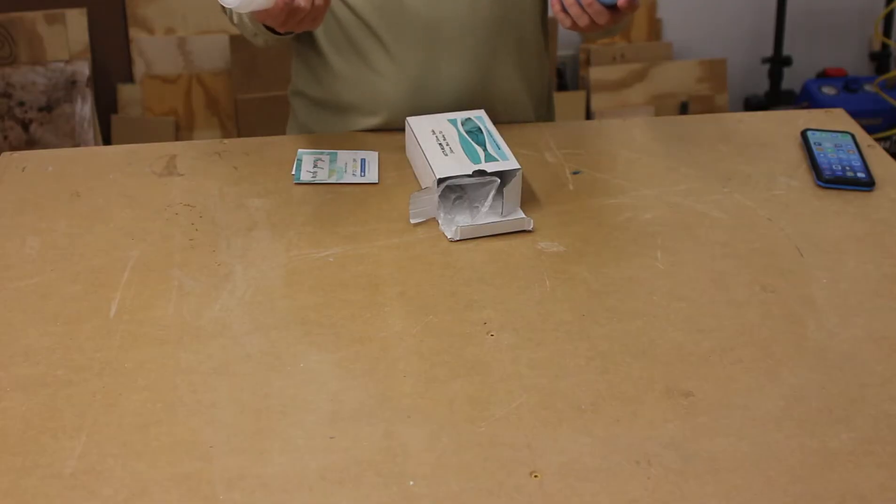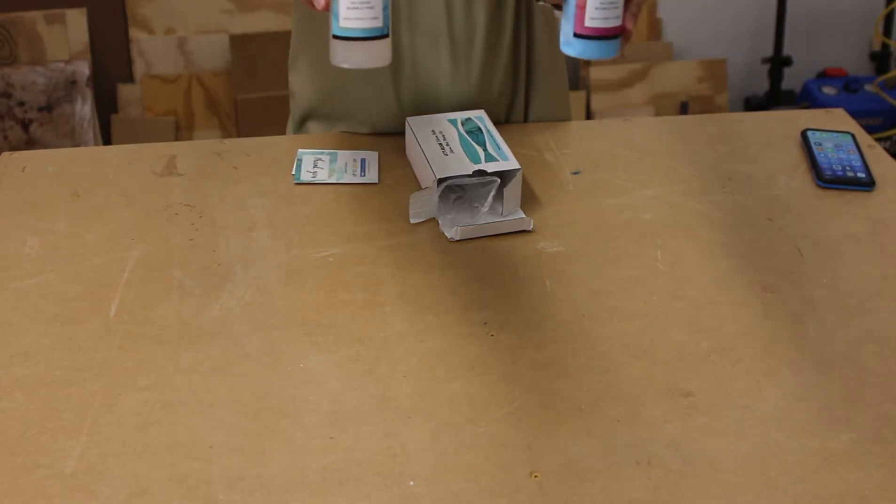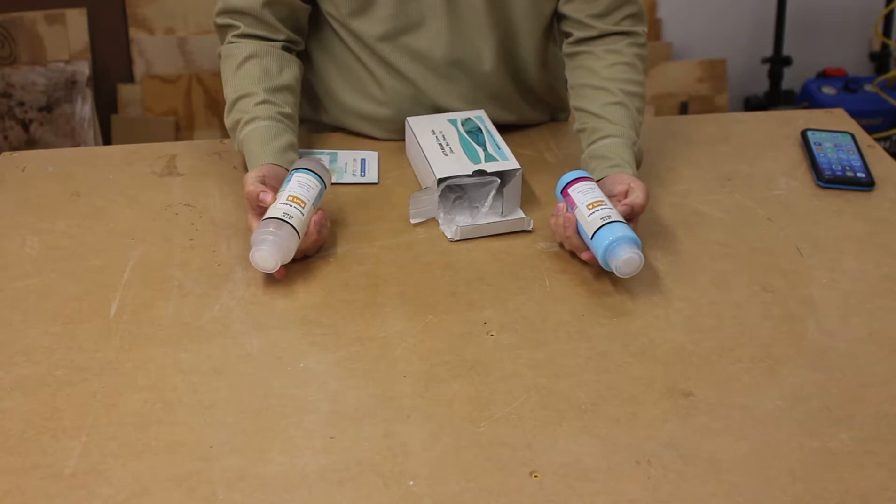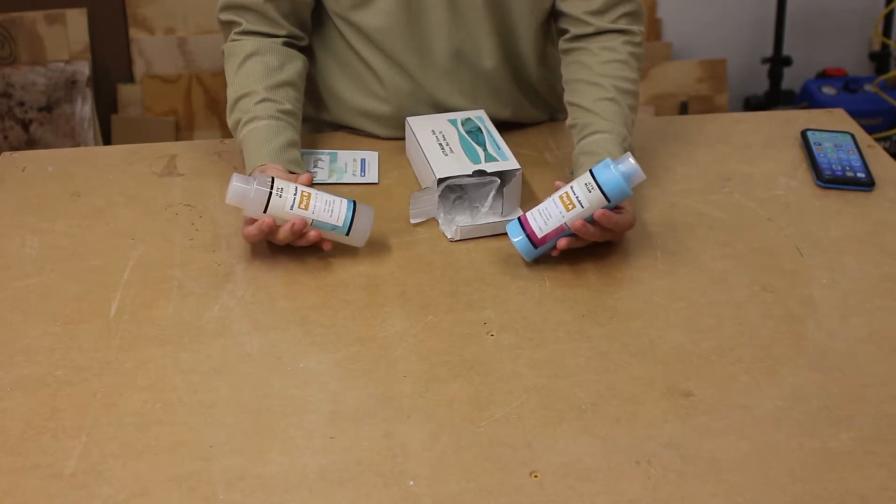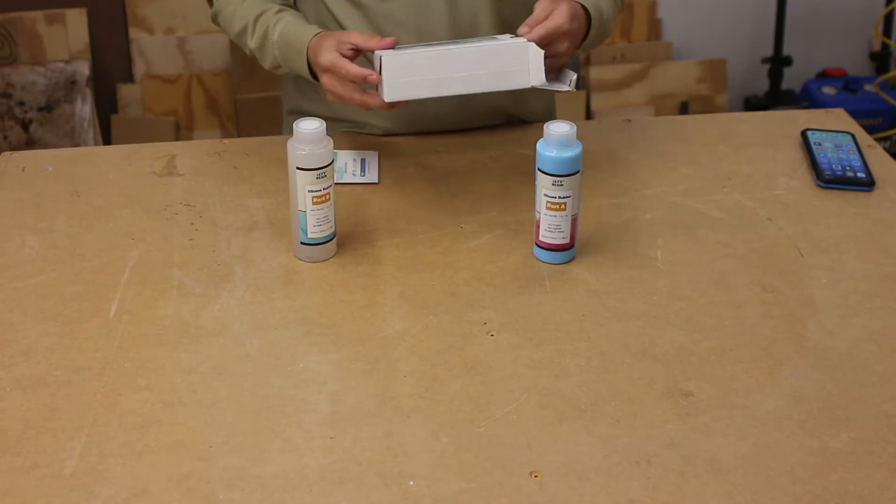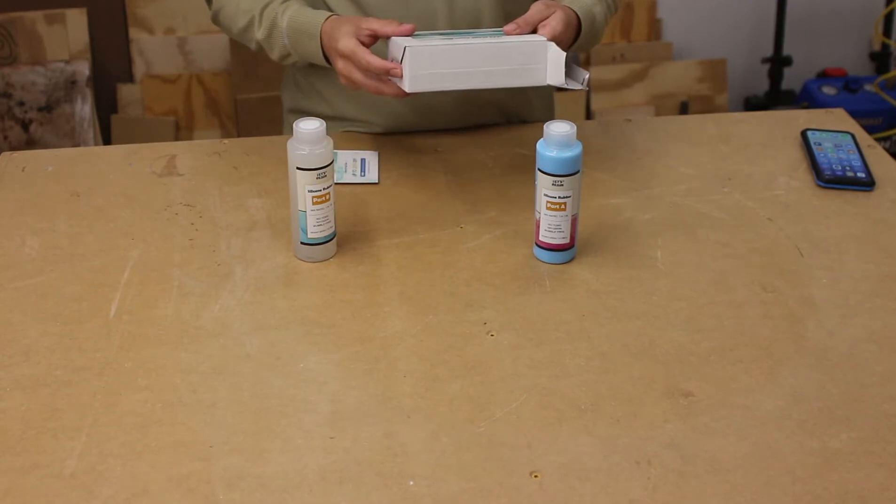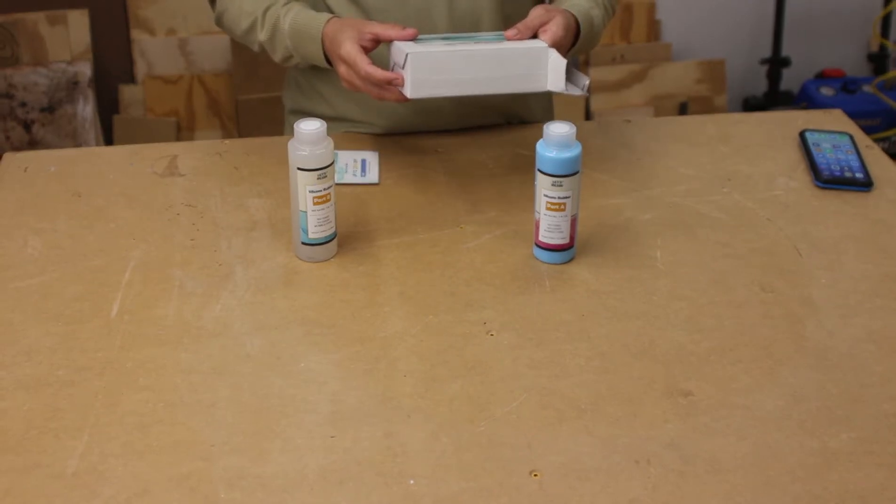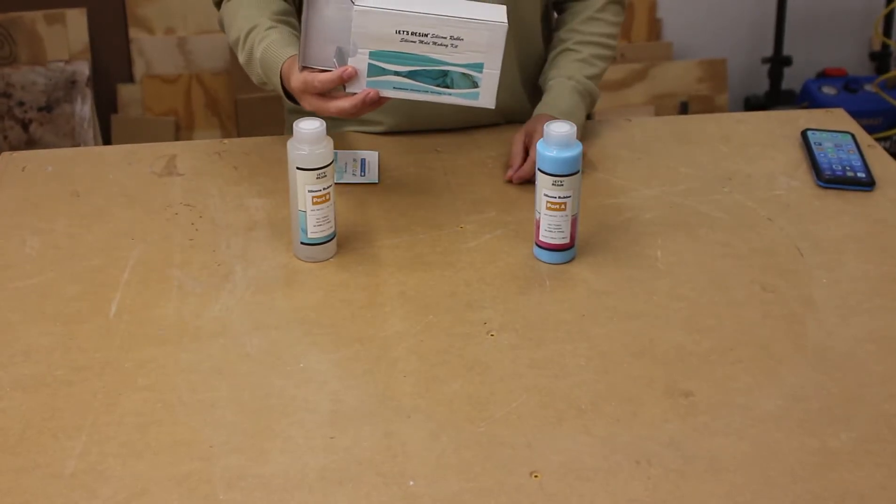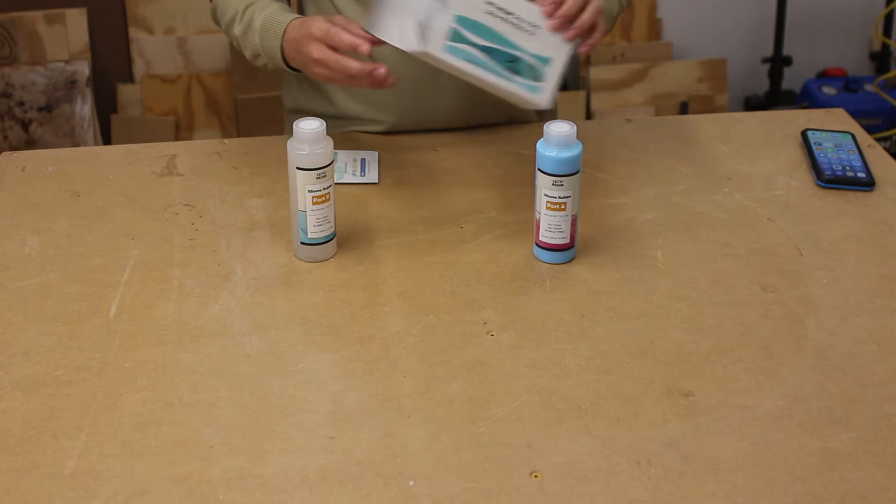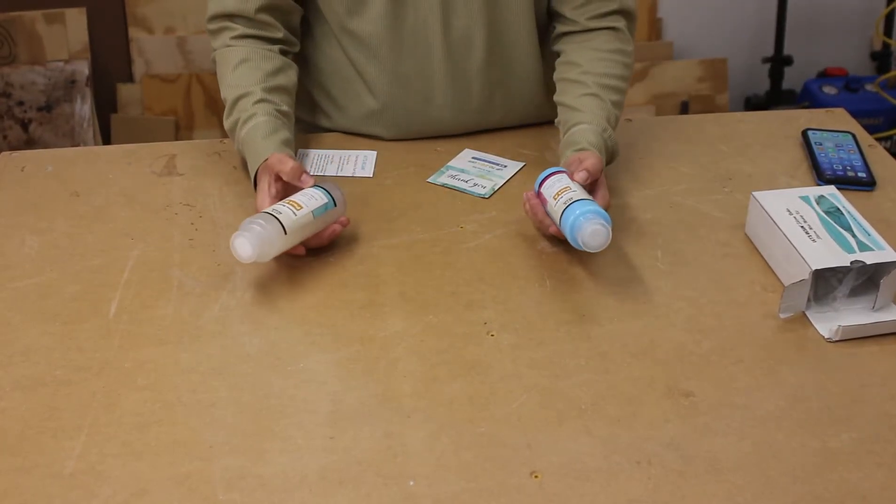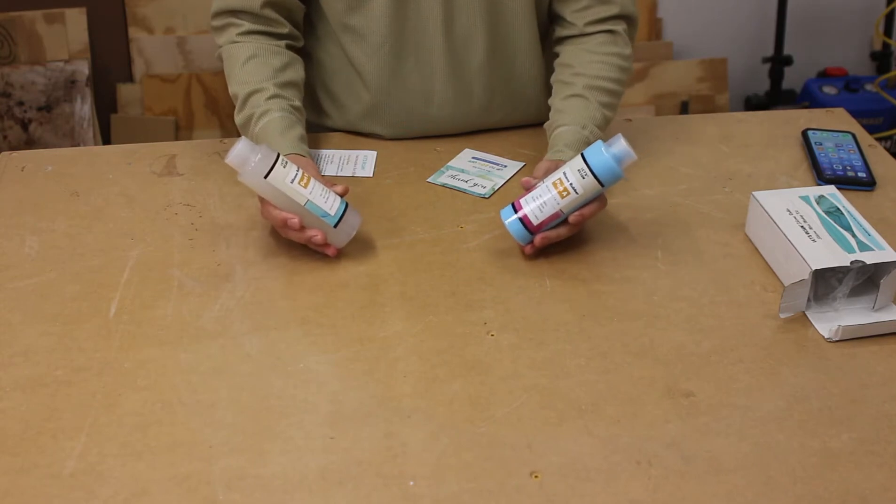So we'll be pouring a silicone mold today. Got this kit off Amazon, I believe it's called Let's Resin. It was very inexpensive, two parts - part A and part B - and you mix a one-to-one ratio. I've never poured a mold before and certainly never used this kit, but it looks pretty straightforward.